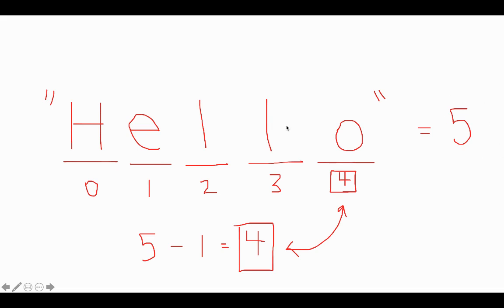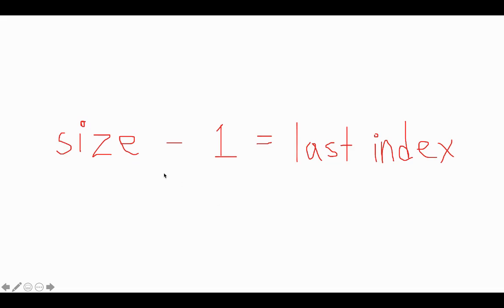And the last index is a 4, right? So if we just subtract 1 from 5, 5 minus 1, we get the last index 4. Okay, those are equal to each other. So what we take away from this is that the size of any string that you can possibly think of minus 1 is the last index of that string, of the last character of that string.